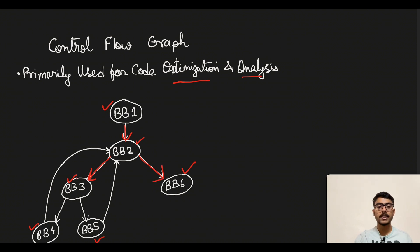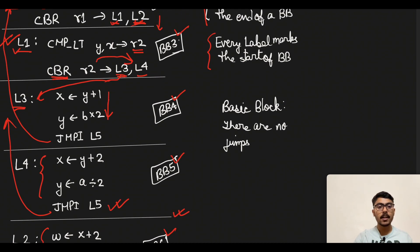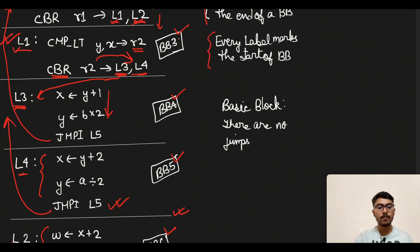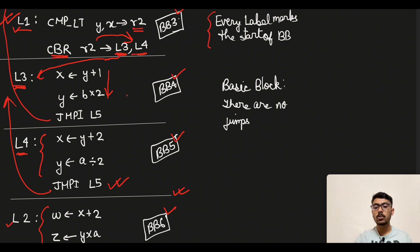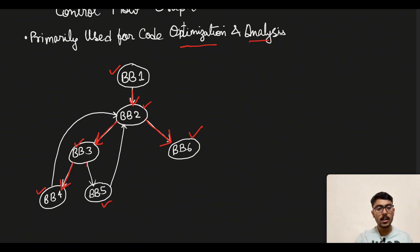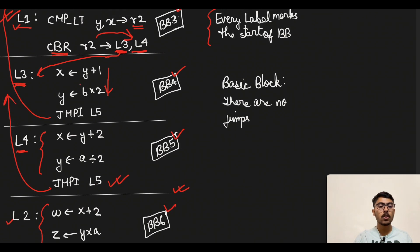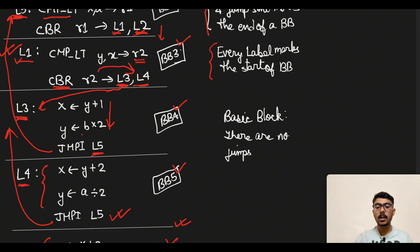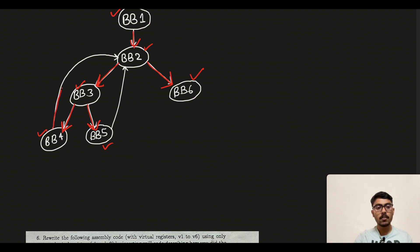Moving to BB3: it again has two branch targets at the end — L3 goes to BB4 and L4 goes to BB5. So BB3 will have arrows going to both BB4 and BB5. Then for BB4: there is only one jump statement here going to L5, and L5 is BB2. So from BB4 we draw an arrow back to BB2.